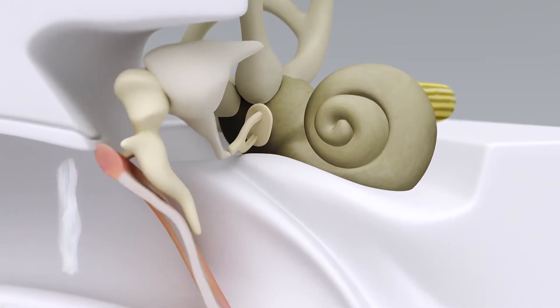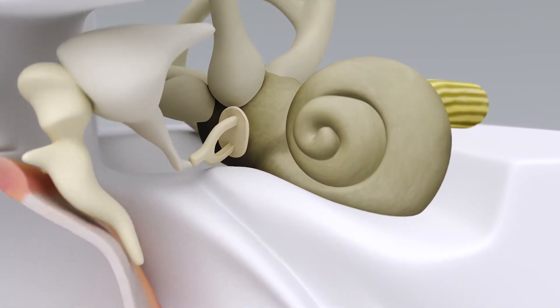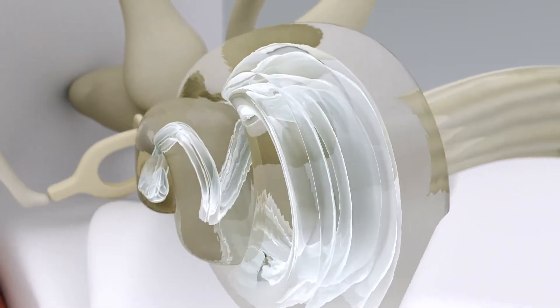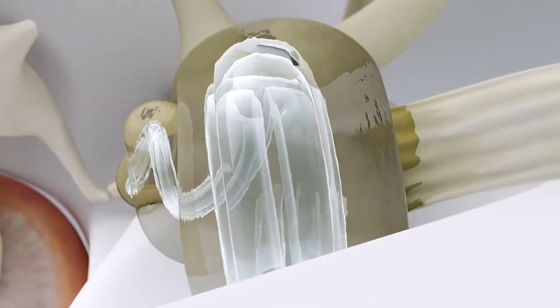In the inner ear is the cochlea, which is similar in shape to a snail shell. It contains several membranous sections, which are filled with watery fluids.